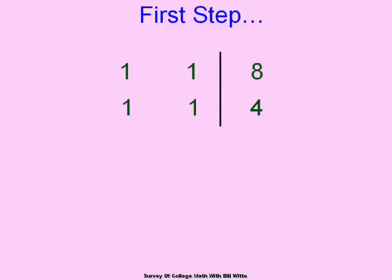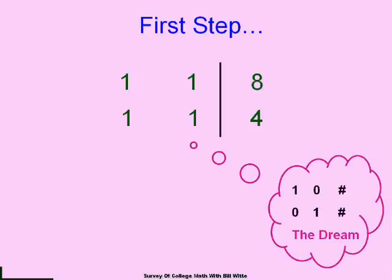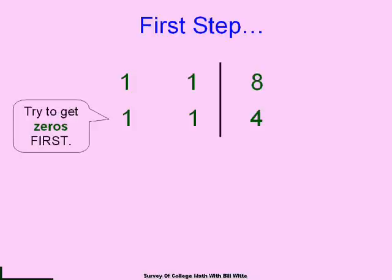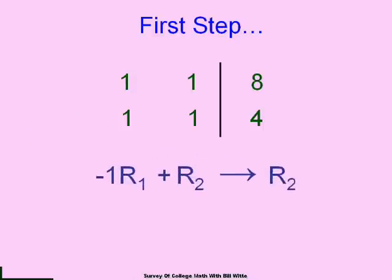Of course we want to get diagonal ones and all the rest zeros in the coefficient matrix — remember your goal. We're going to try and get those zeros because we already have the ones. First thing I would do is multiply row 1 by negative 1 and add it to row 2, and I have to replace one of the rows with that. I'll replace row 2 with it.